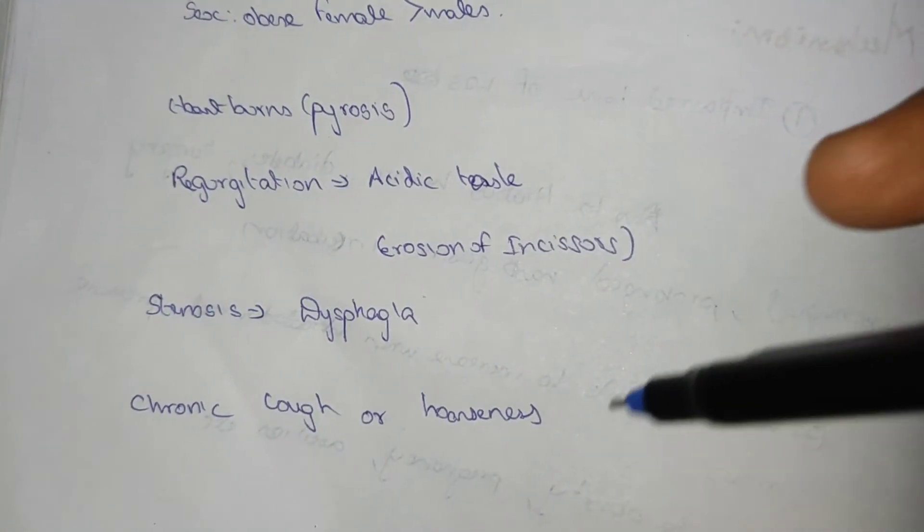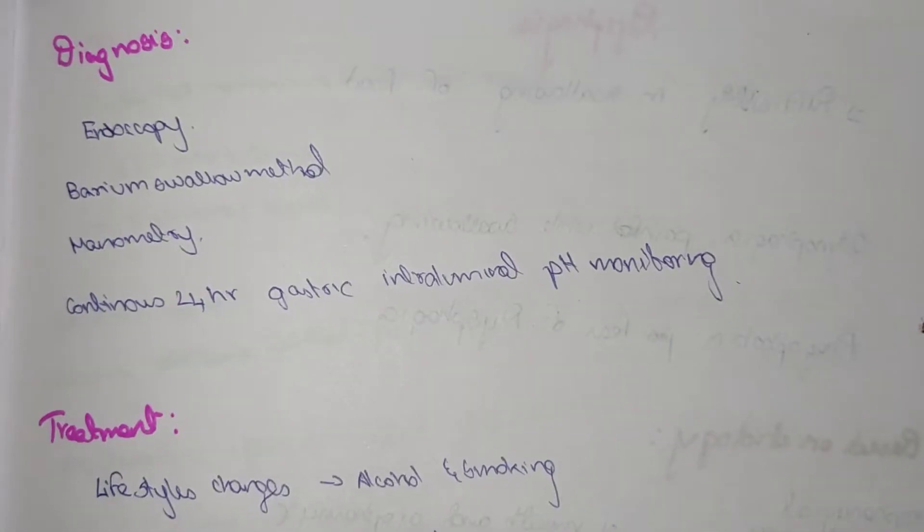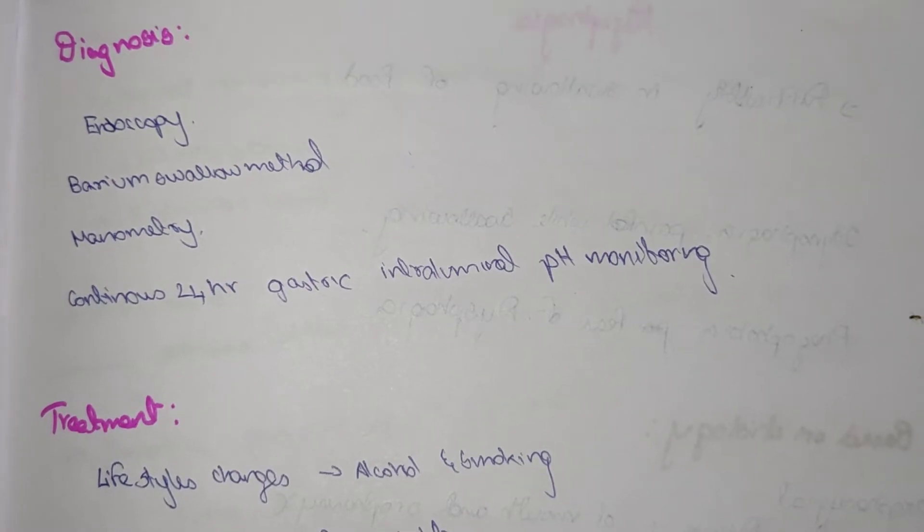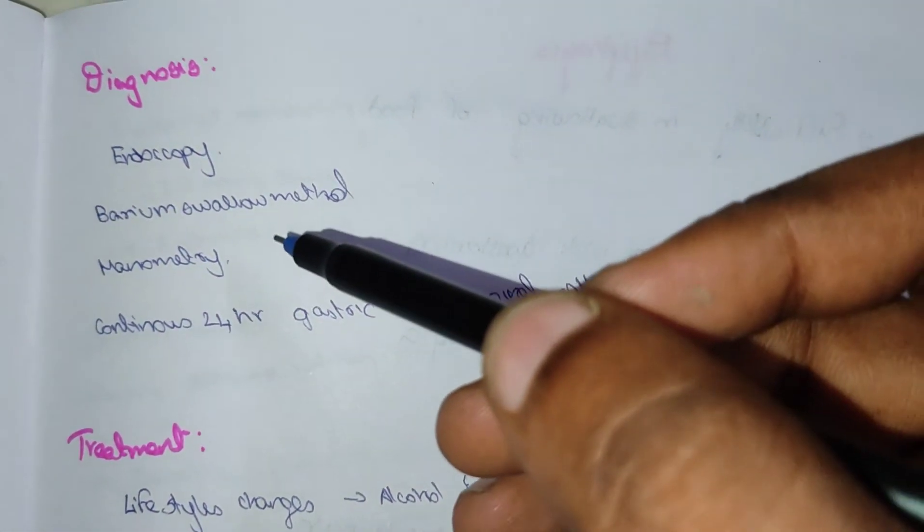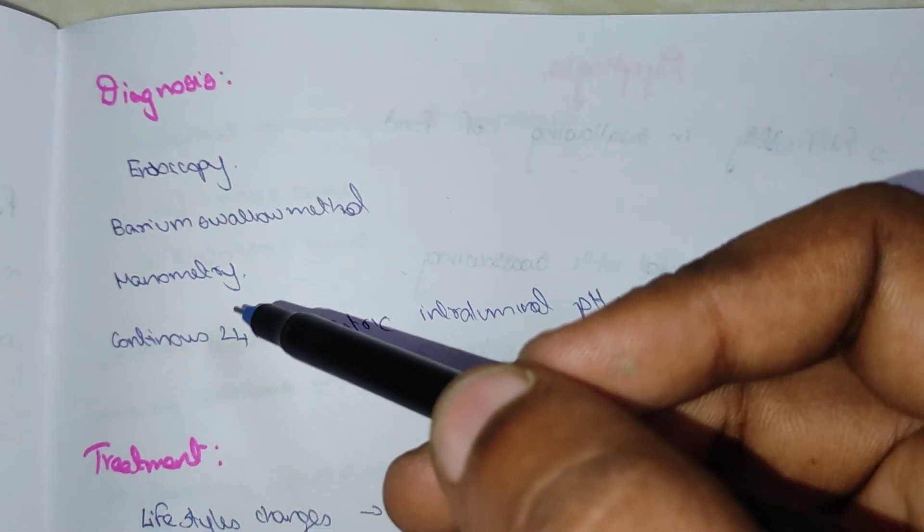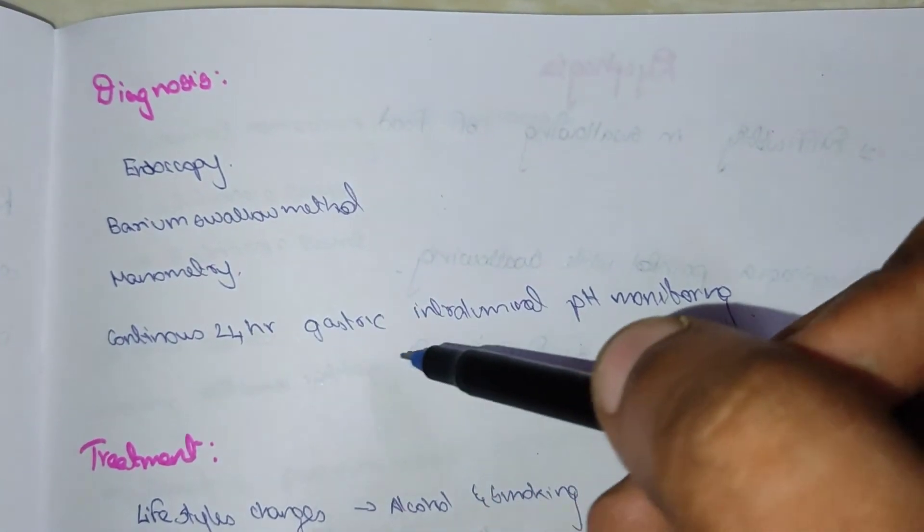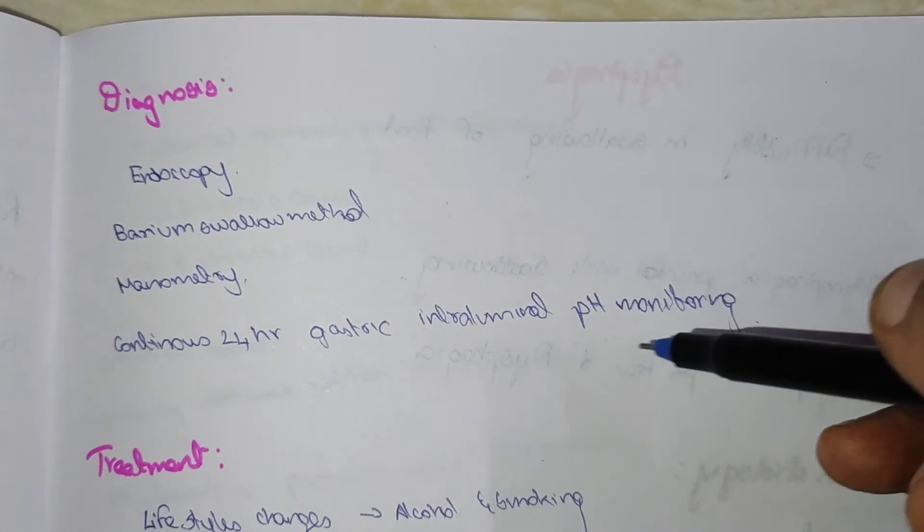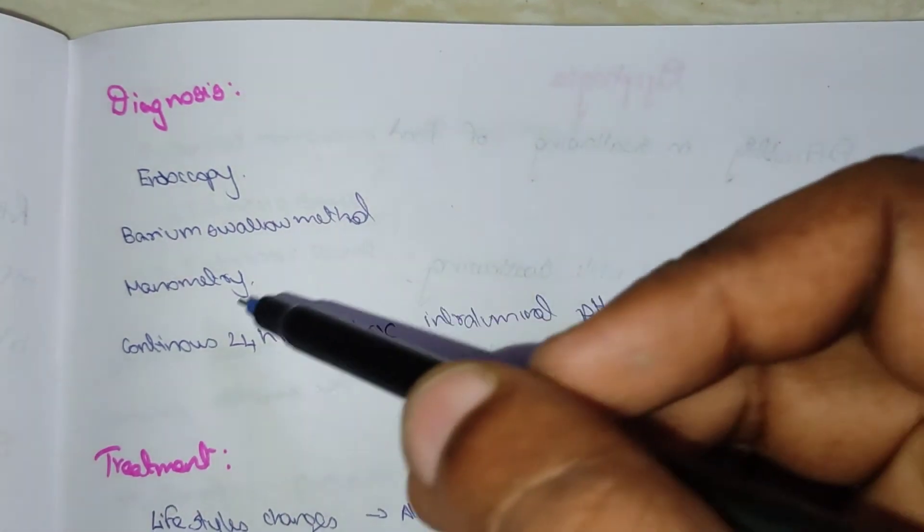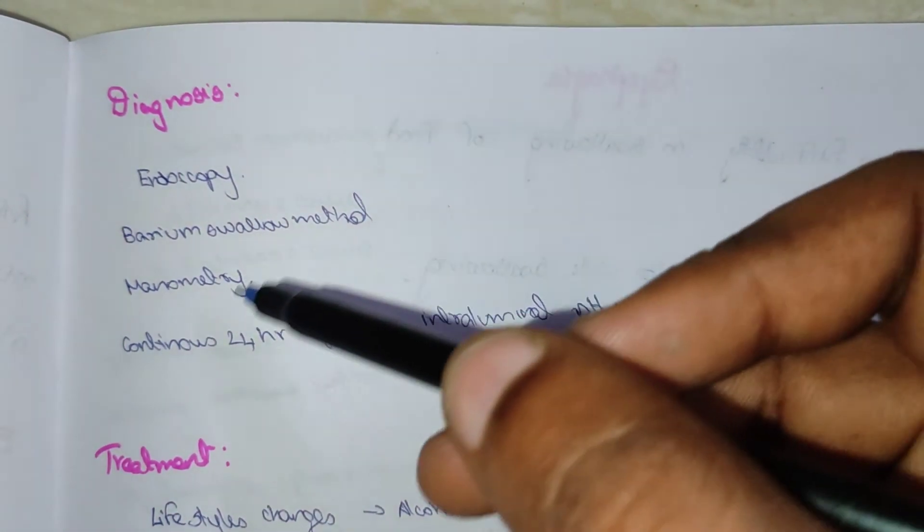Now we will see about the diagnosis: endoscopy, barium swallow method, manometry, and continuous 24-hour gastric intraluminal pH monitoring. This is the ideal and it is mostly done for this disease to diagnose whether GERD is there or not.